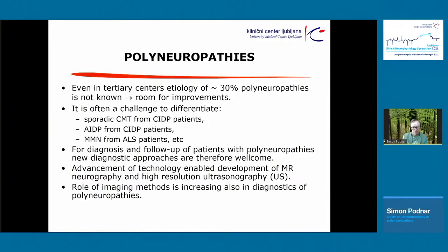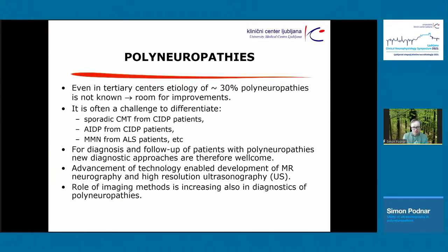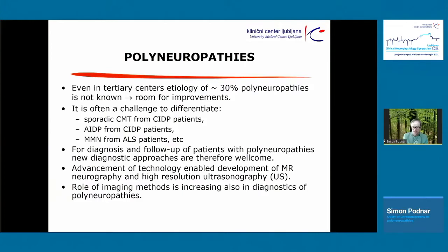It is also important not just for diagnosis but also for follow-up of patients with polyneuropathies, particularly if you use treatments like intravenous immunoglobulins. There are two relevant developments in this field: MR neurography and high-resolution ultrasonography. I will talk, as the title tells, about ultrasonography.